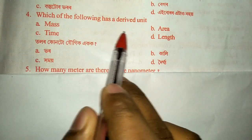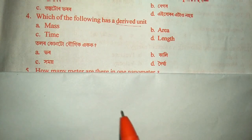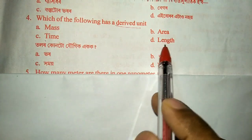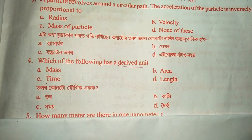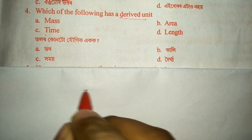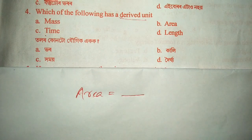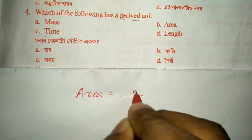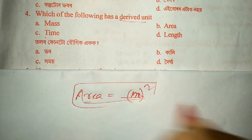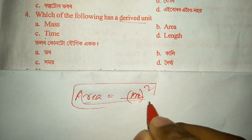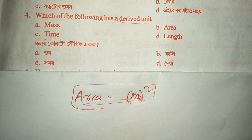Question number four: which of the following has a derived unit? Derived means two or more units combined together. Mass has the simple unit kilogram, time is seconds, length is meters. But area is the answer here, because area means length squared — meter squared — so it is a derived unit since we have used meter two times.